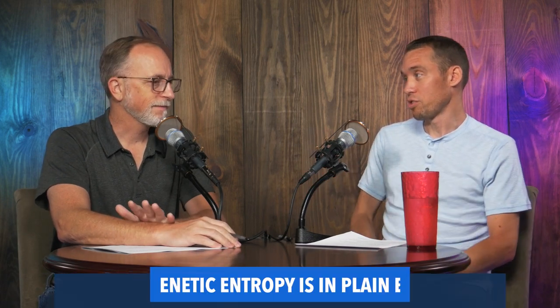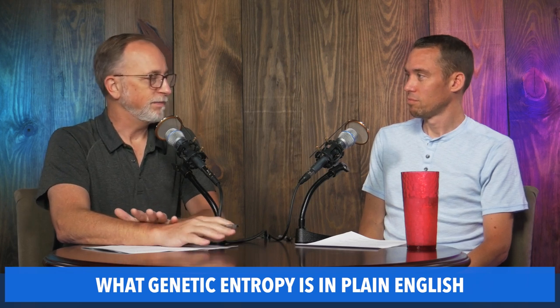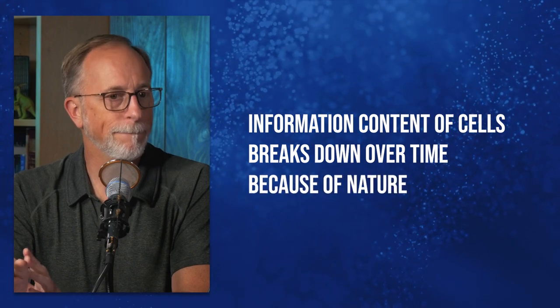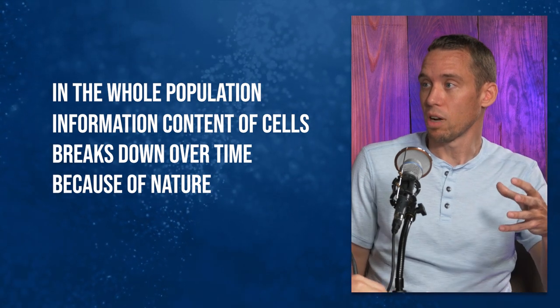Let's break it down for a lay audience. What is this thing we call genetic entropy? Genetic entropy is a very simple thought: the information content of the cell breaks down over time because of nature. And it will do so in a species — in the whole population. Over time, not only does an individual accumulate more mutations the older they get, eventually dying of cancer or something like that, but populations also accumulate mutations, because those that occur in the individual are inherited by the next generation. And natural selection can't remove them because natural selection isn't powerful enough to see them. Most of these mutations are harmful. They degrade the genome of an organism over time, and the whole species will naturally head toward extinction. That's why it's genetic entropy — it's going from order to disorder in the same way that physical systems do.